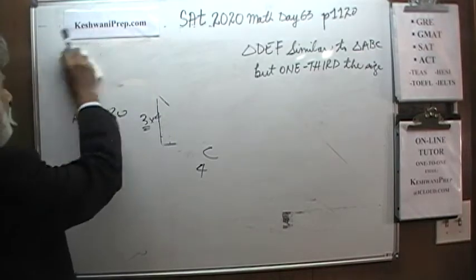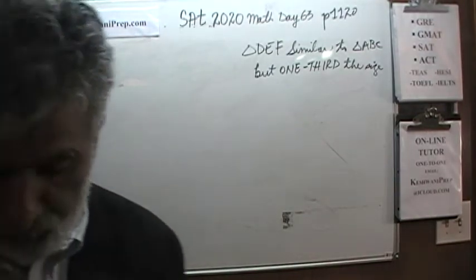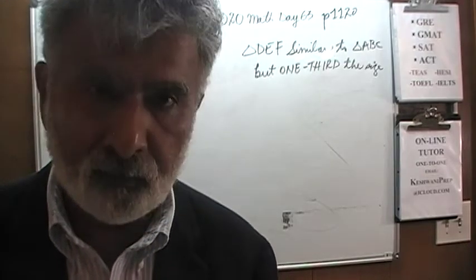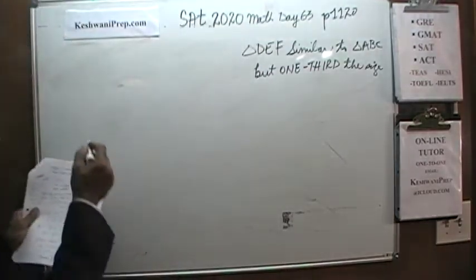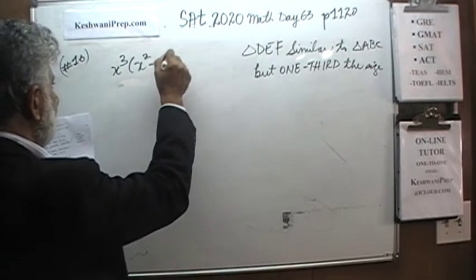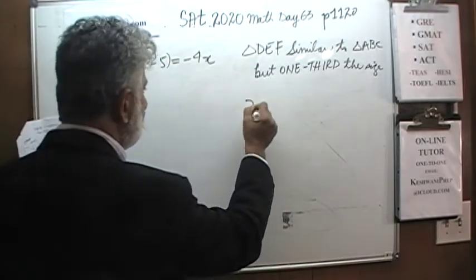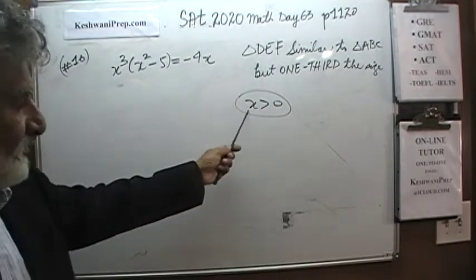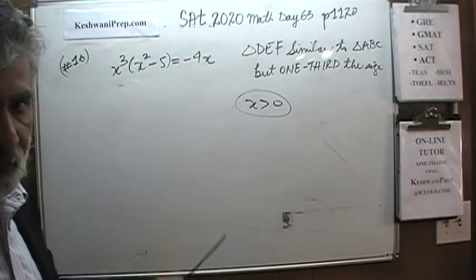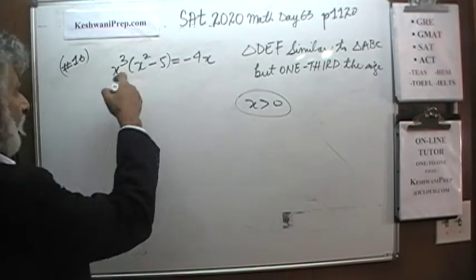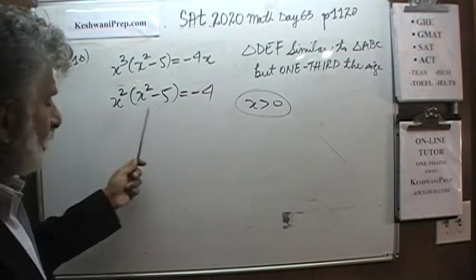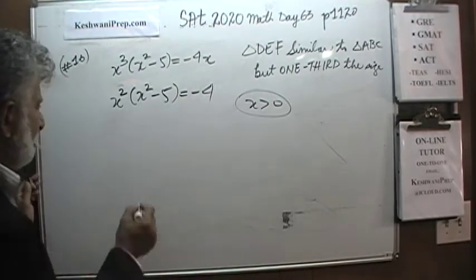For those curious to see how to solve number 16 in a classical algebraic manner, I promised to do it at the end. Starting with x cubed times (x squared minus 5) equals negative 4x. Since x is greater than 0, x is not equal to 0, which means we can safely divide the entire equation by x. This gives x squared times (x squared minus 5) equals negative 4. Let's substitute a new variable: let y equal x squared.